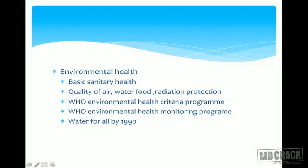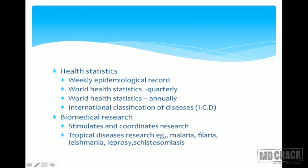WHO has an environmental health criteria program and an environmental health monitoring program. In health statistics, WHO produces weekly epidemiological records and world health statistics quarterly and annually. The International Classification of Disease (ICD) is another major development. The aim is to classify all diseases so that countries can compare and contrast disease data. Since there was no uniform classification beforehand, ICD was developed — every disease is coded and that code is uniformly followed around the world.